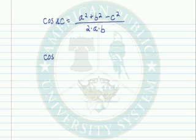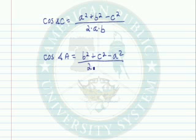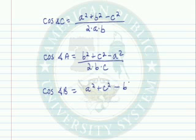Let's look at how it would look for the cosine of angle A. For angle A, we'd have b² plus c² minus a² over 2 times b times c. And if we were trying to find angle B, given these same three side lengths, we would have a² plus c² minus b² over 2 times a times c.